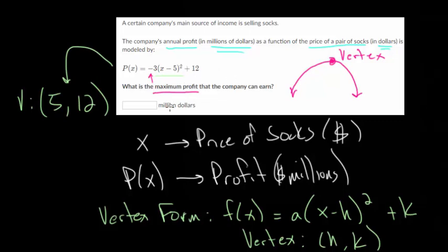And we want the maximum profit. So notice the units, it's in millions of dollars, which is our profit. That's what we're looking for. And we just found out that the vertex, the peak of this curve is at a sock price of $5 and a profit of $12 million. So our answer here is just 12, it's the y value of our vertex. That's the nice part about these questions.